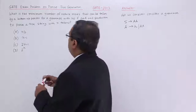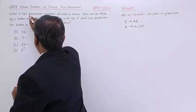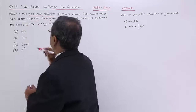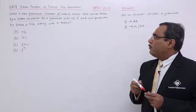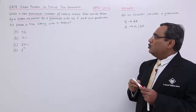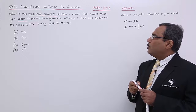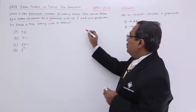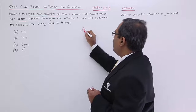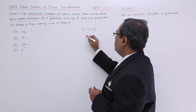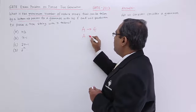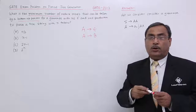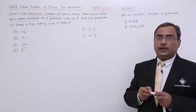The keywords here are 'maximum number of' — that is very important — and 'bottom-up parser,' that is also very important. This is for a grammar with no epsilon and no unit production. That means there will be no production like A produces epsilon, and unit production means a non-terminal produces a non-terminal.